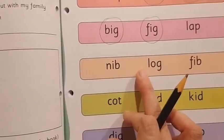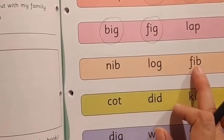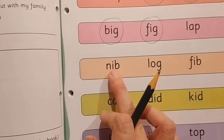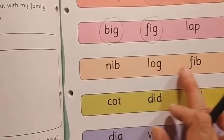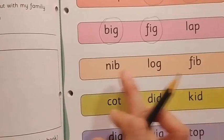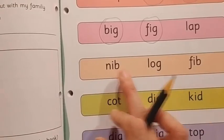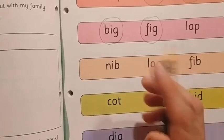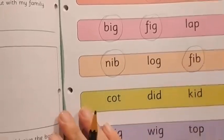Next: N-A-I-B, Nib. L-O-O-G, Log. F-U-H-I-B, Fib. Sounds 'ib'. Sounds 'og'. Sounds 'ib'. Have we found 'ib' anywhere here? Yes, we have already found it. So N-A-I-B, Nib and F-U-I-B, Fib — they are rhyming words. Let's go to the next one.